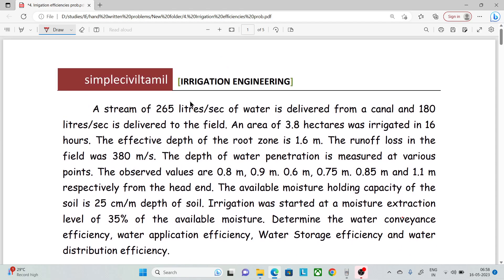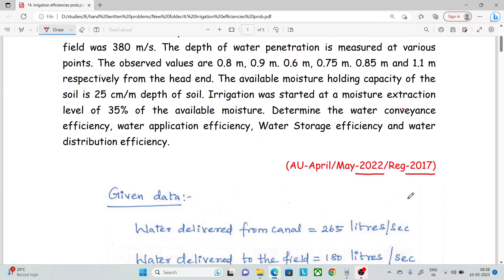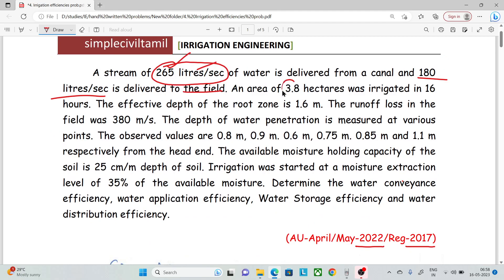A stream of 265 liters per second, that is the discharge value, is delivered from the canal and 180 liters per second is delivered to the field. An area of 3.8 hectares was irrigated in 16 hours.